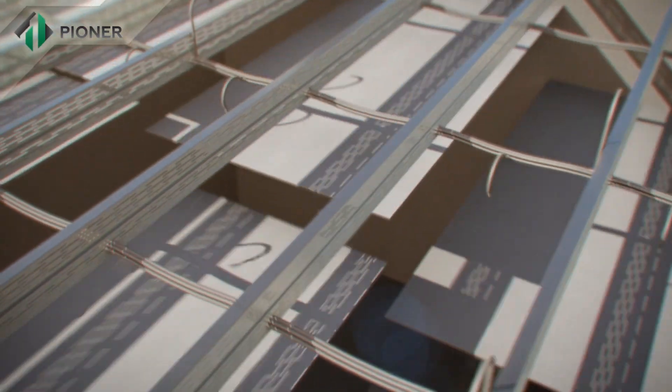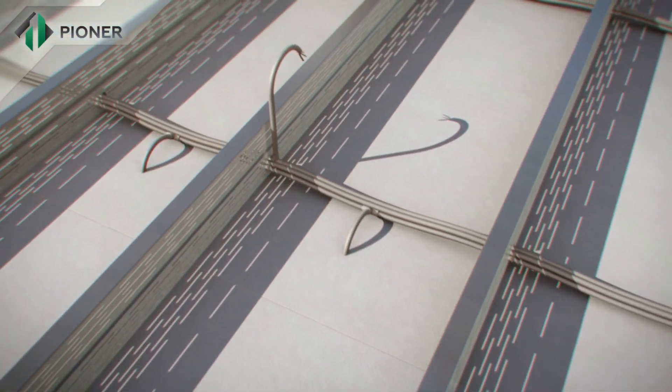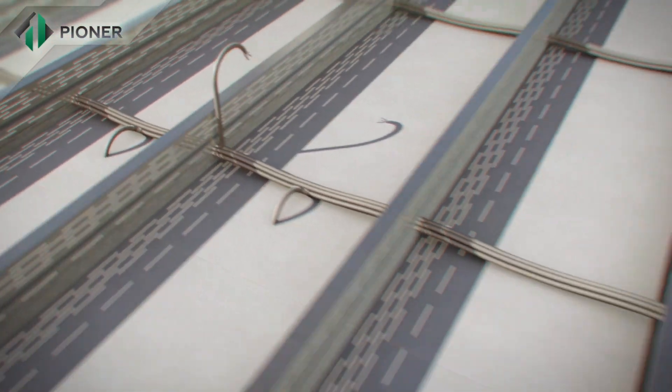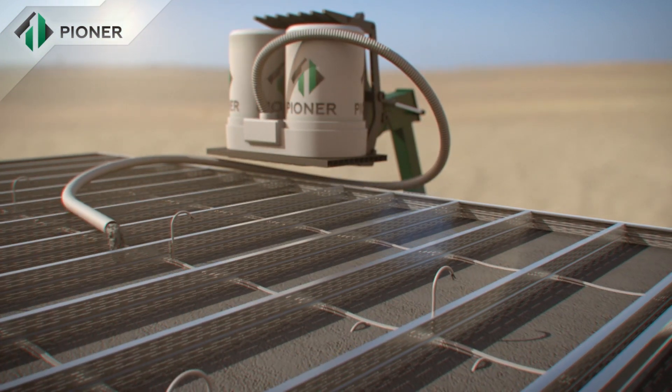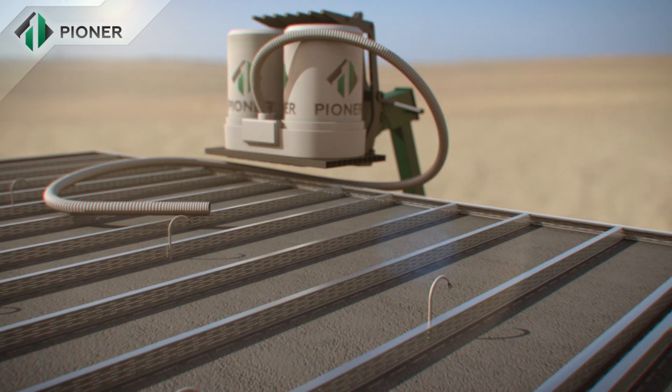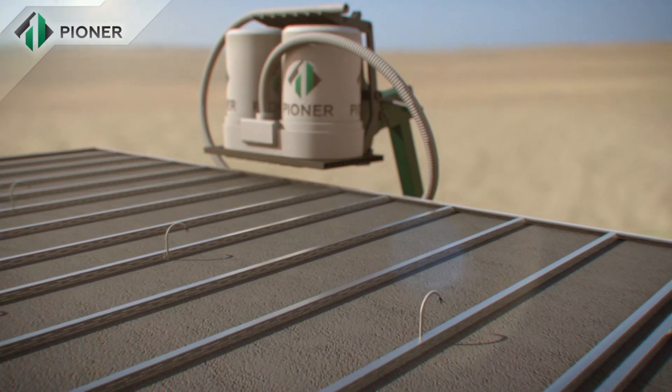Horizontal slabs and flat roofs built by Pioneer technology are mounted in the way similar to that for vertical walls. The panels are fixed to a metal frame and the Pioneer mix fills up the space and rises to the required level.